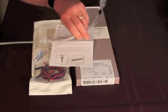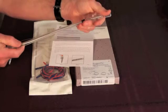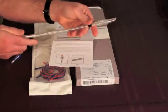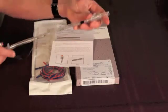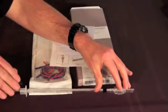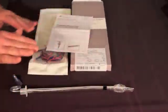We recommend the use of a stylet to straighten the endotracheal tube when applying the electrode, and I will turn it over now so that the bottom or posterior side of the tube is facing up.